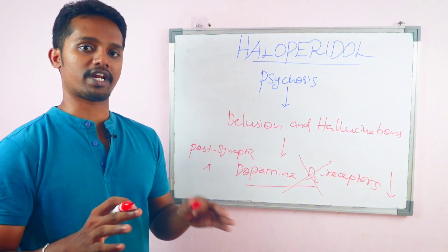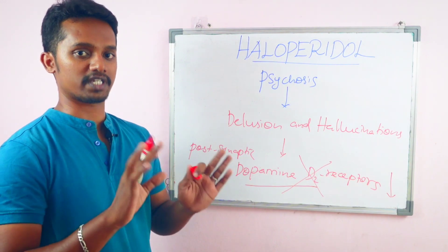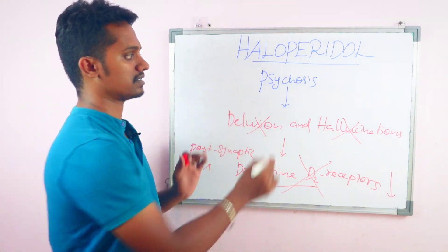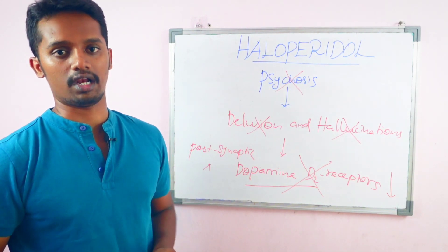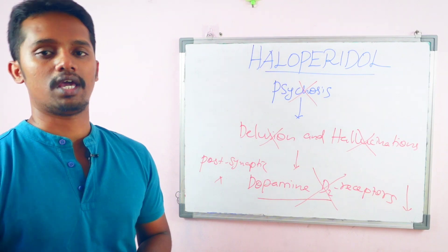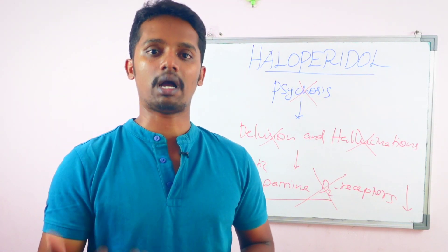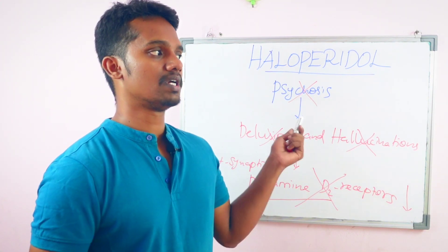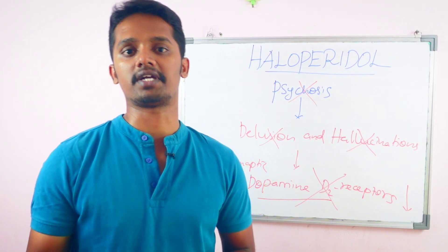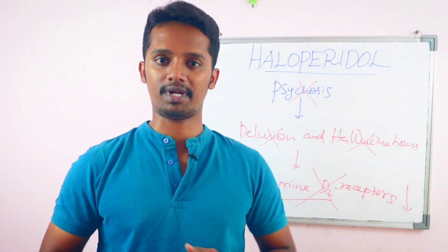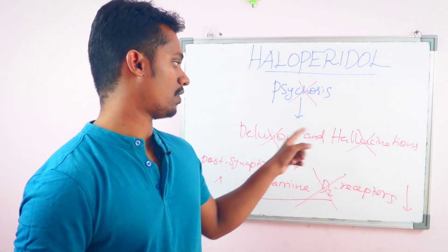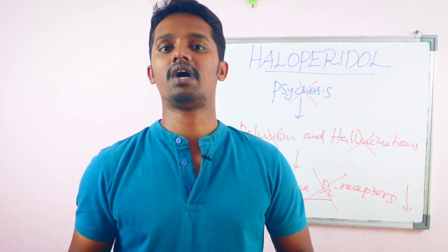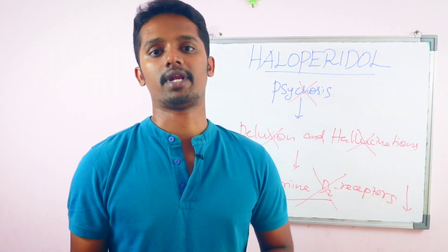When this receptor is blocked, dopamine — the neurotransmitter — cannot activate it. This prevents delusion and hallucination from developing, which is why haloperidol helps with psychosis. It is particularly useful for schizophrenia. Simply put: haloperidol blocks the dopamine D2 receptor, preventing delusion and hallucination. That is the mechanism of action.